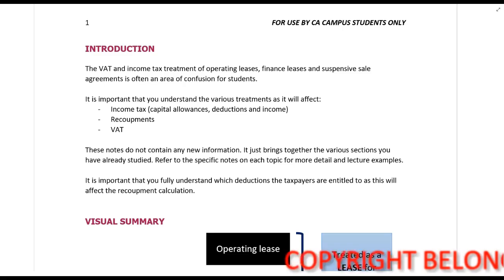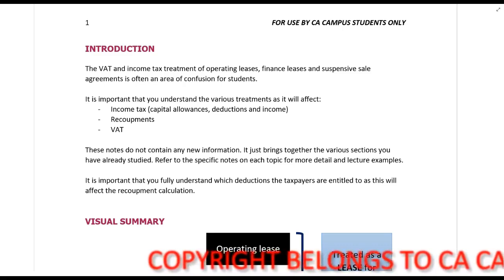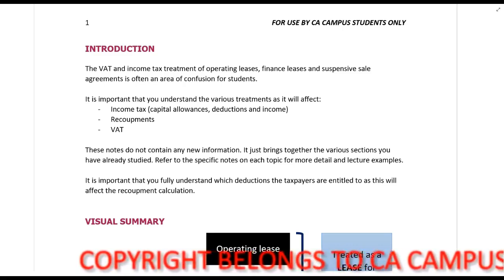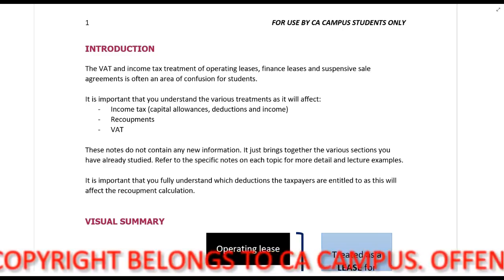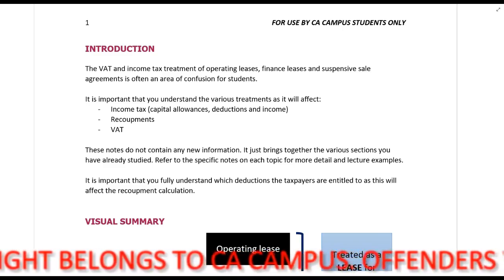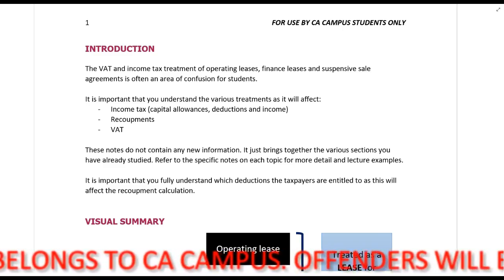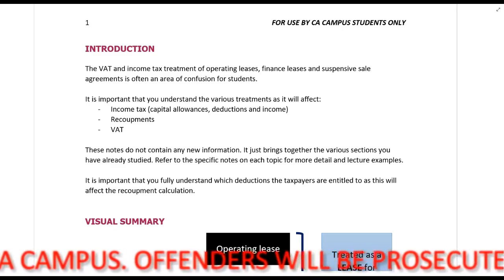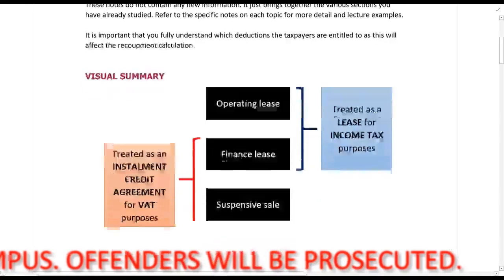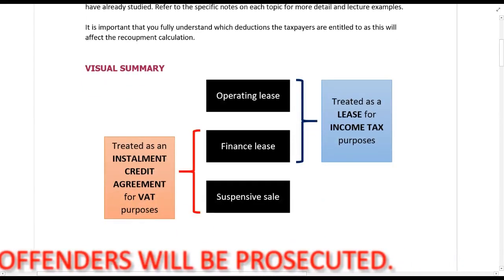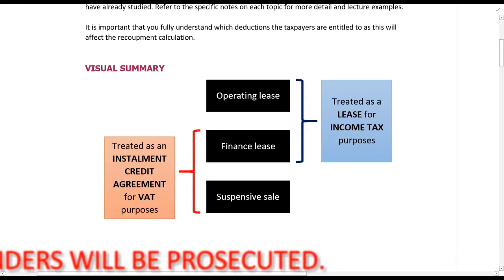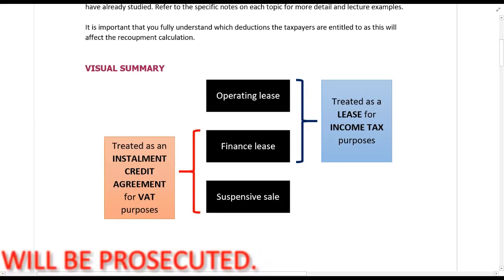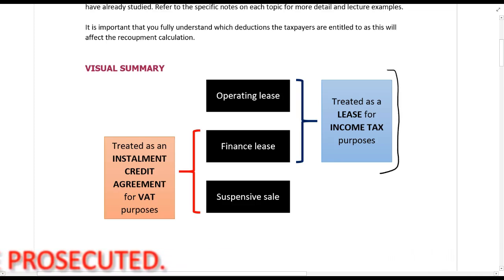In this section we're going to be looking at the VAT treatment as well as the income tax treatment of these different types of transactions that taxpayers might get involved in. The VAT side we're not going to go into too much detail because this is studied separately under VAT, but I will give you the necessary recap here. When we look at these three types of events or transactions — operating leases, finance leases, and suspensive sales — the operating lease and the finance lease are treated the same way for income tax purposes; they're both just treated as a lease.